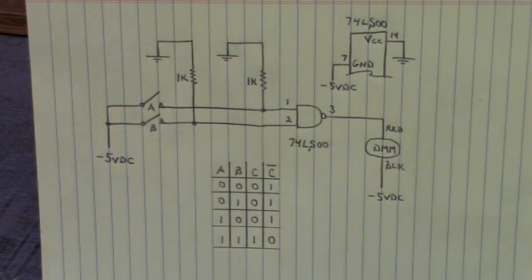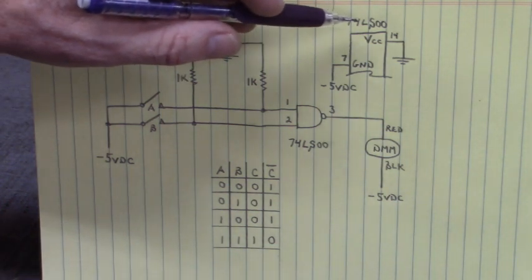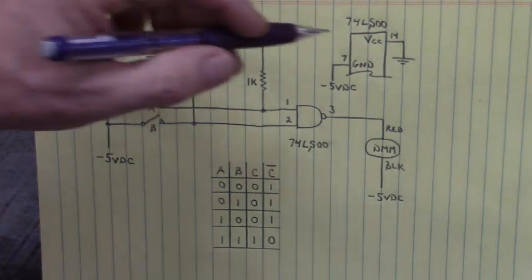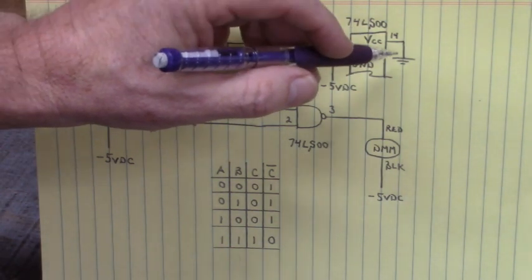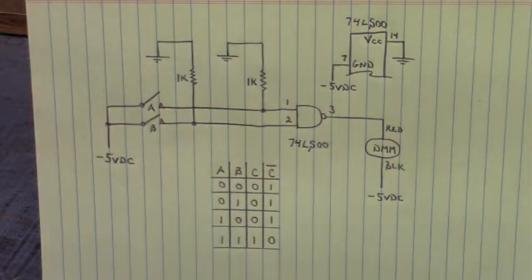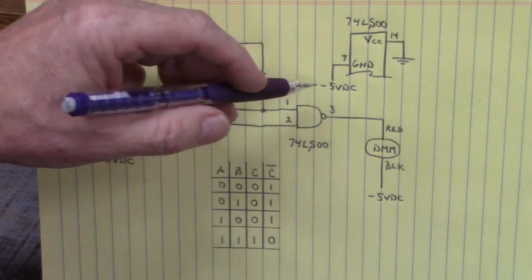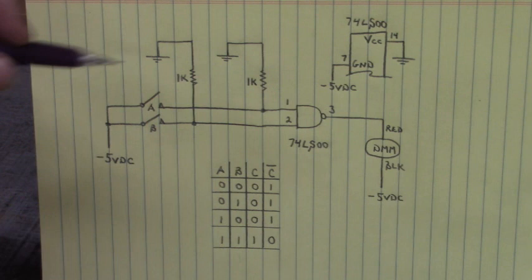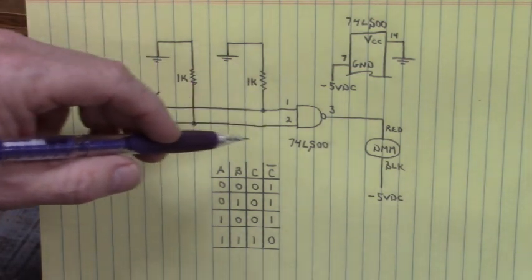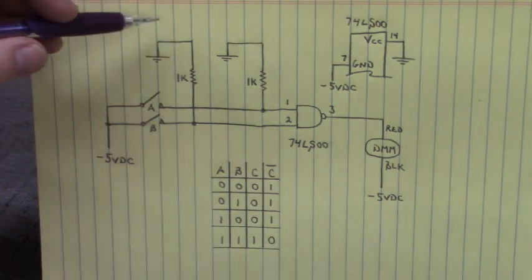Here is our circuit schematic on paper. Let's look at the power supply requirements for the 74LS00. Pin 14 VCC of that IC is tied to ground. Pin seven ground is tied to negative five volts DC. Let's see. Back here on the two inputs, we have two one kilo ohm resistors pulled up to ground.